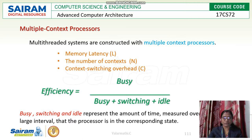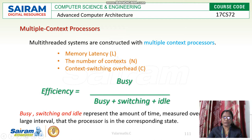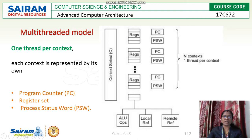Moving to multiple context processes, a formula is derived showing the efficiency of context switching technologies. A context can take three states: busy state, switching stage, or idle stage — each representing an amount of time. The efficiency is calculated as: Efficiency = BC / (BC + switching + idle), that is, BC divided by the sum of all three states. This is how the efficiency of a multiple context processor is calculated.